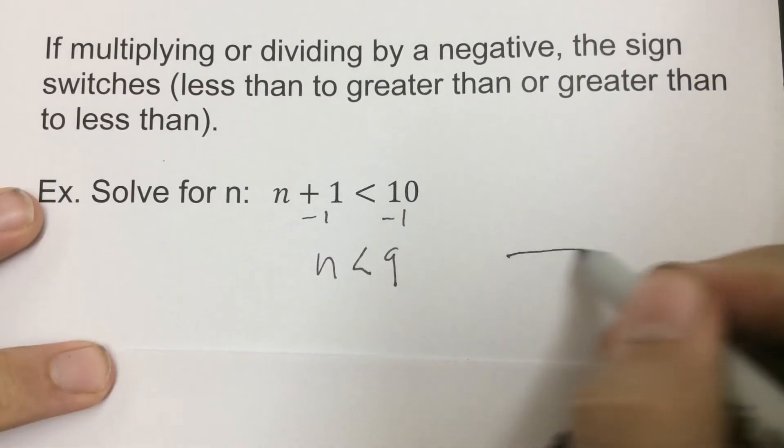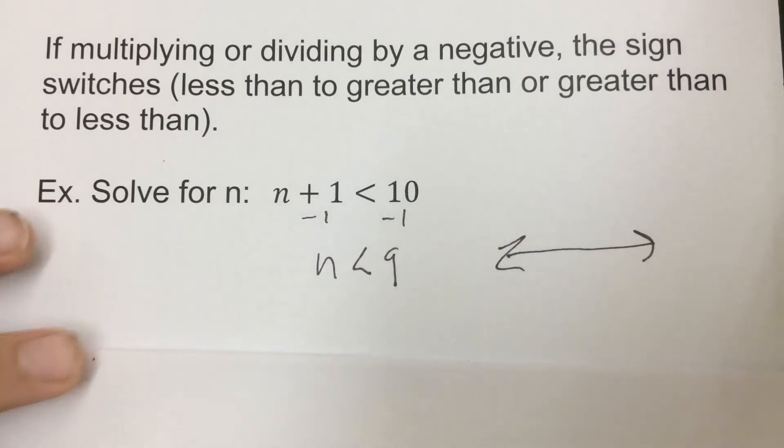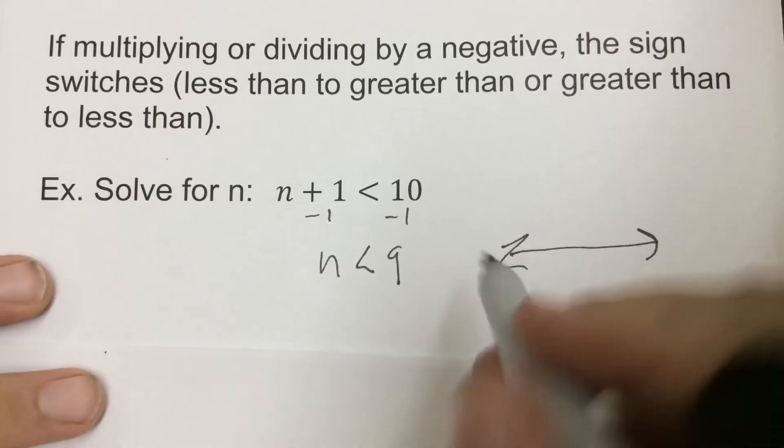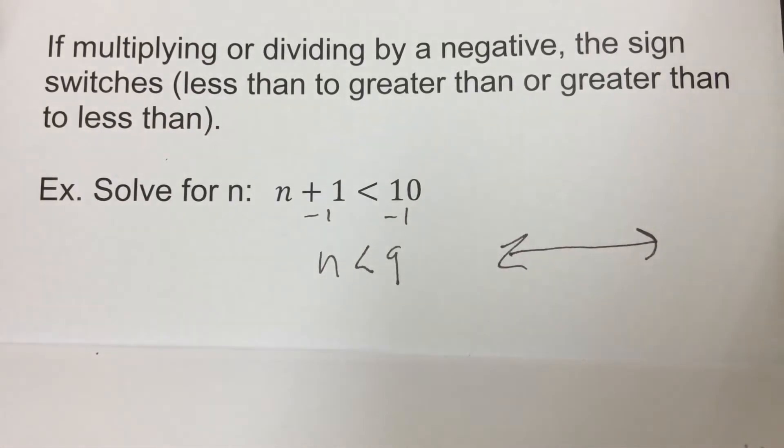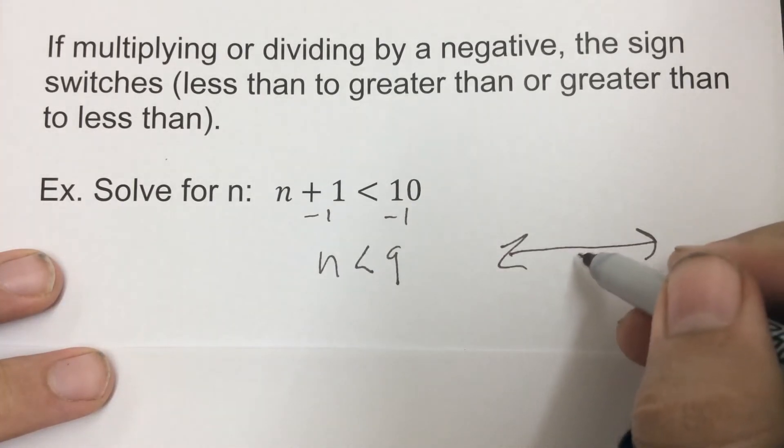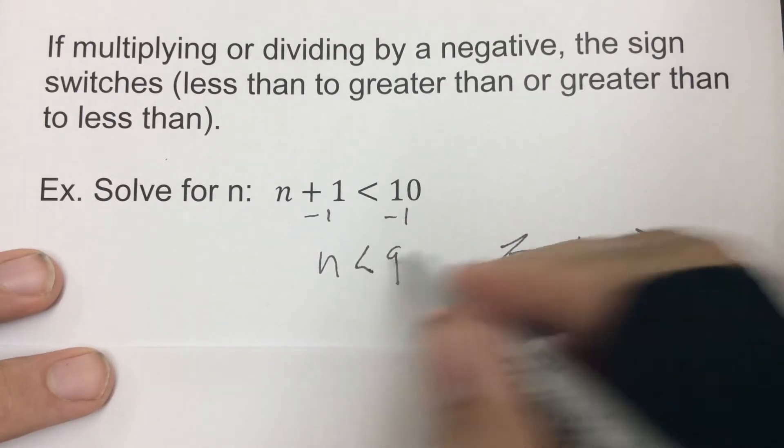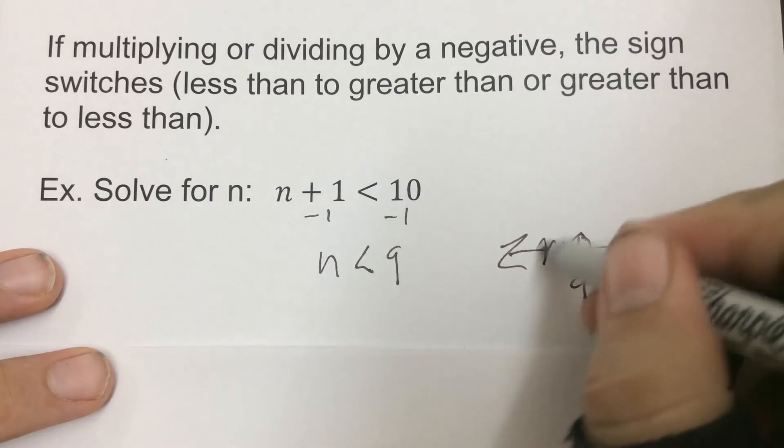Now on IXL this is all you gotta do. Typically though, when we're dealing with inequalities, we'll graph it on a number line as well. So all you have to do there, I'm going to show you this just so you kind of have an idea of what to expect in the future when you're doing this. Again, IXL won't have you do it, but just so that you have an example here. So we would have our 9 in the middle. Because it's less than, it's an open circle, and then we shade the way it goes.